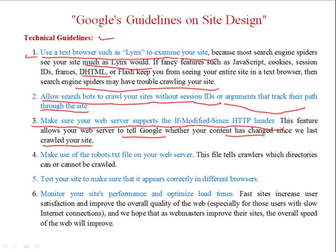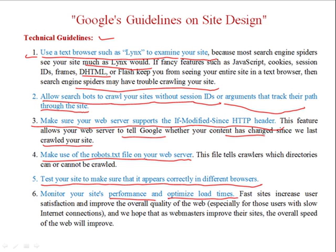This HTTP header feature allows your web server to tell Google whether your content has changed since it was last crawled. Make use of the robots.txt file on your web server so the crawler gets information about which directories it can and cannot crawl. Test your site to make sure it appears correctly in different browsers. Monitor your site's performance and optimize load times. It is better to increase the use of textual content rather than heavy animated information, which is not easily readable by text spiders or crawlers.